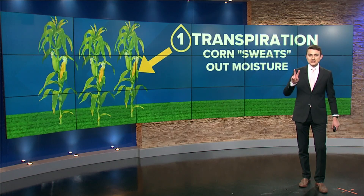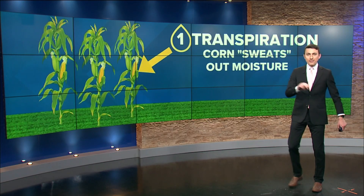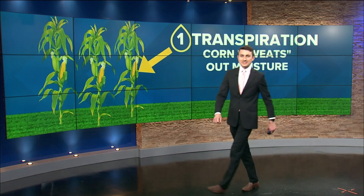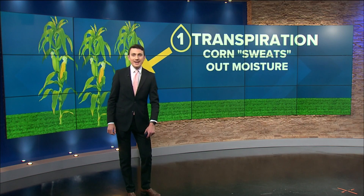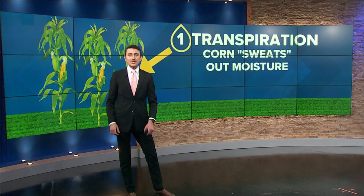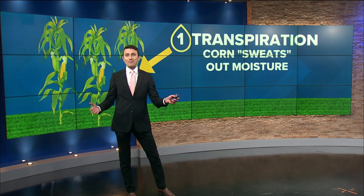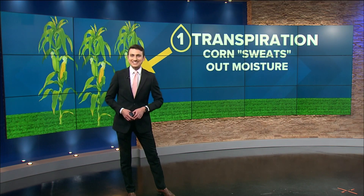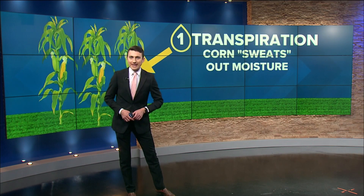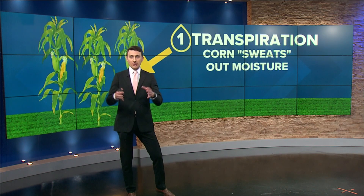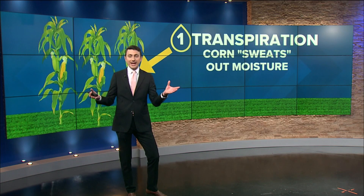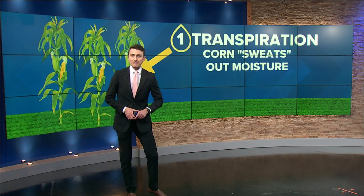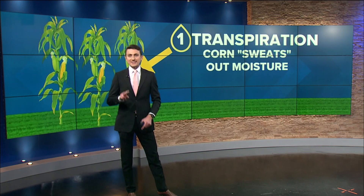Evapotranspiration has two parts. The first is what is known as transpiration — the corn sweats out moisture. That's the easiest way of describing it. Moisture is lost, and when that moisture goes into the air, it becomes muggier and more humid.